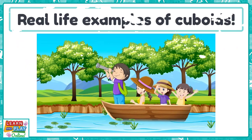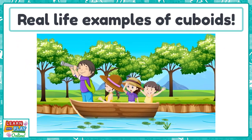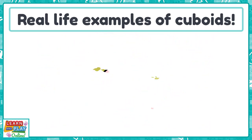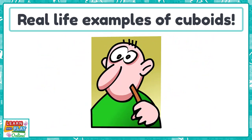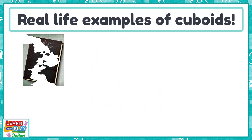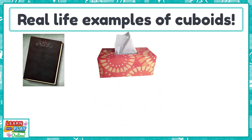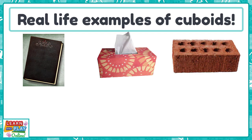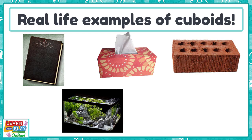Now that you know the features of cuboids, let's brainstorm some examples of them. What real-life examples can you think of that are in the form of a cuboid? Pause the video now to think about it or discuss it with someone. Here are some of the real-life examples of cuboids that we came up with: a book, a tissue box, a brick, a fish tank, and gift boxes.